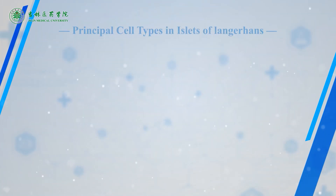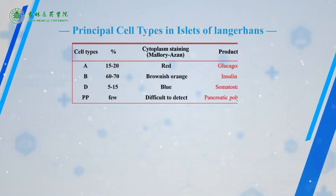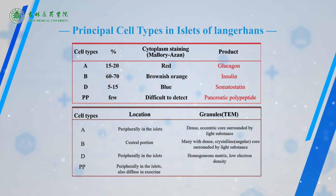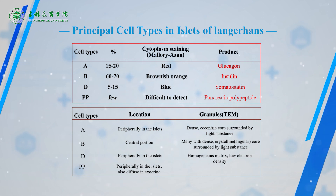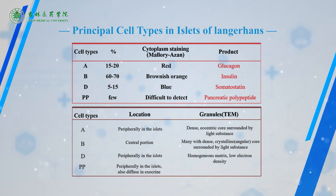In addition to the above cell types, the islet also contains PP cells, which secrete pancreatic polypeptide involved in inhibition of gastrointestinal motility, secretion of pancreatic juice, and contraction of the gallbladder.